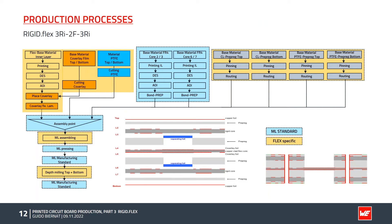The next chapter looks at the important processes in the production of a symmetrical rigid-flex printed circuit board. What you see is only a highlighted, summarized representation of the manufacturing process — there isn't enough space to show all processes. The fields highlighted in blue correspond to a standard production process for rigid circuit boards.